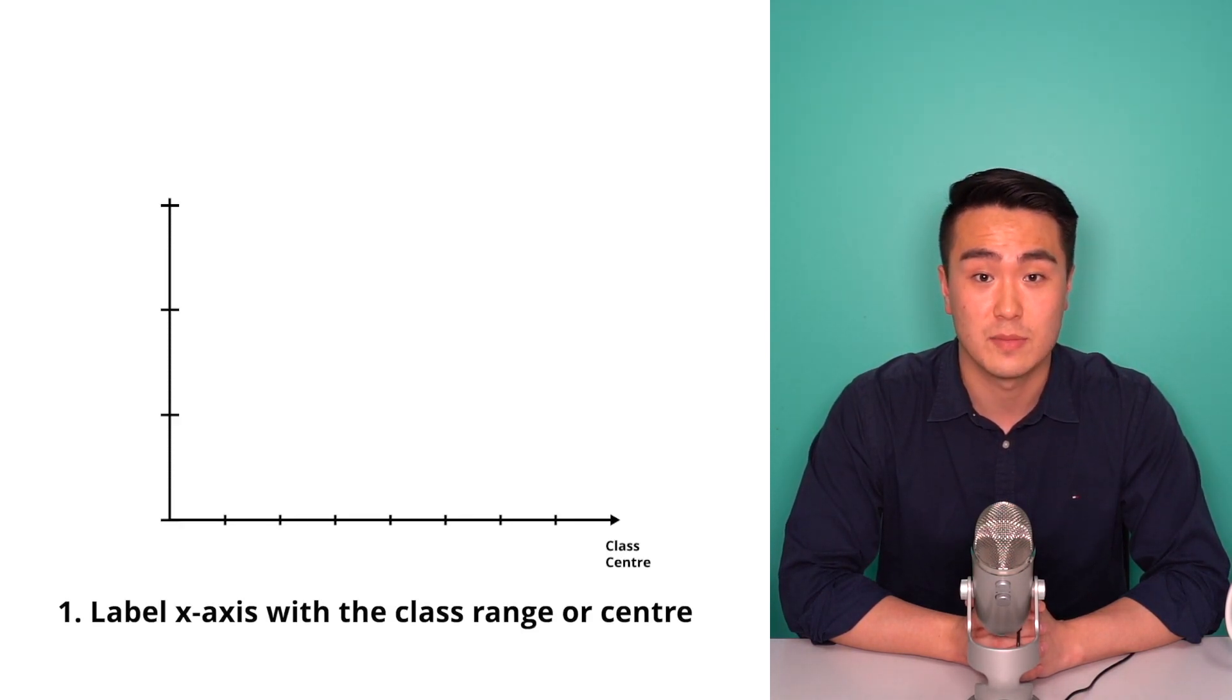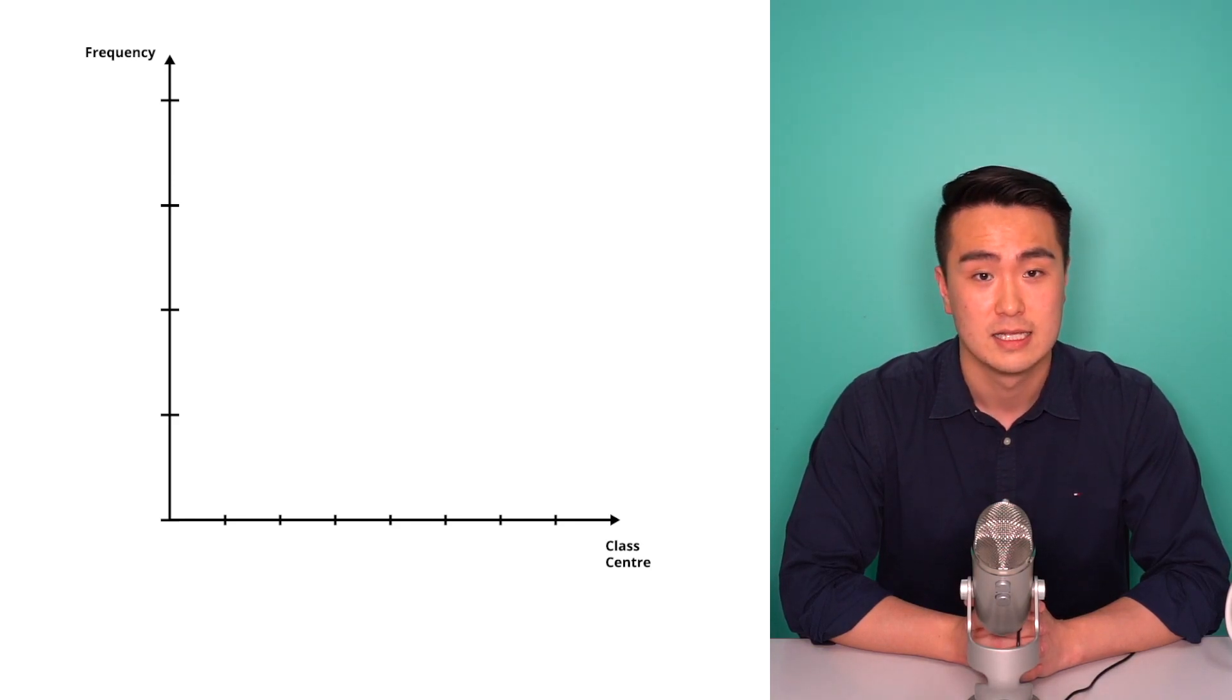Firstly, each consecutive tick mark on the x-axis does not represent a continuous scale, but rather each tick mark represents a successive outcome or class. So in our example, we label each tick mark with the class range or the class center.